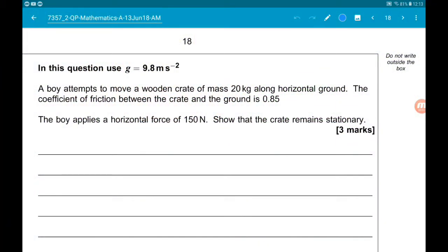Okay, question 13. We have friction and forces. In this question, we are using g = 9.8 m/s². A boy attempts to move a wooden crate of mass 20 kilograms along horizontal ground. The coefficient of friction between the crate and the ground is 0.85. The boy applies a horizontal force of 150 newtons so that the crate remains stationary.